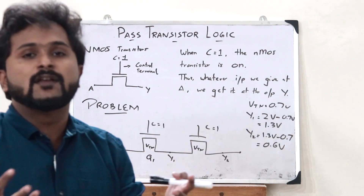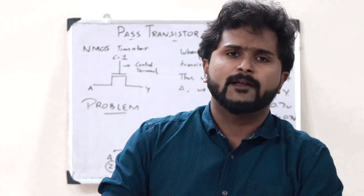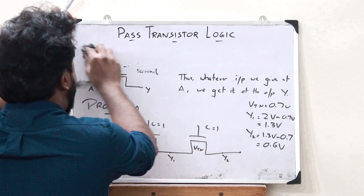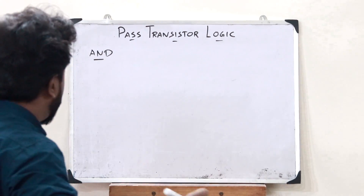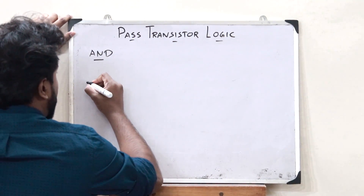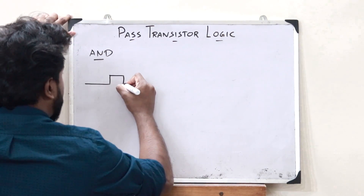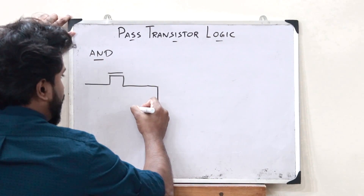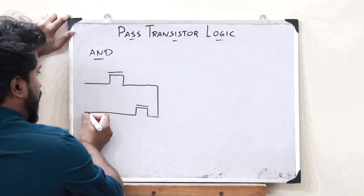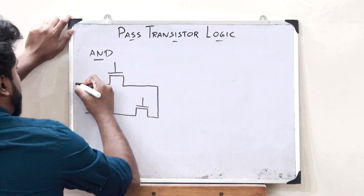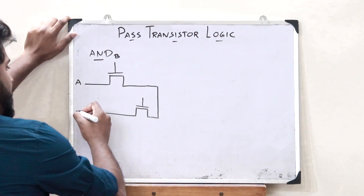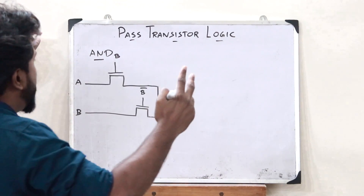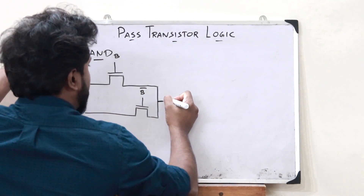Pass transistor logic can be used to implement logical functions like AND and OR gates. To construct an AND gate using pass transistor logic, we have two NMOS transistors connected together. Here we give input A, and here we give B as the control terminal, while on the other transistor we give B bar as the control terminal. We obtain the output Y, and this is how we construct a 2-input AND operation.